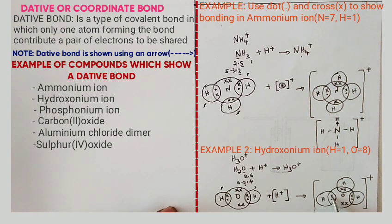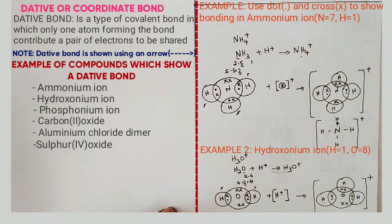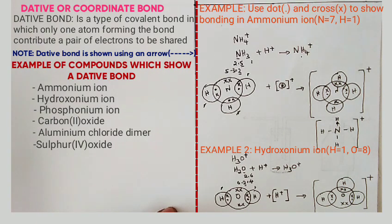So in the hydroxonium ion, there are two covalent bonds and one dative bond. In the next lesson, we are going to look at bond types across oxides of Period 2–3 and chlorides of Period 2–3 elements. Thank you.